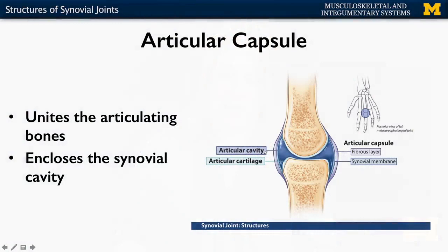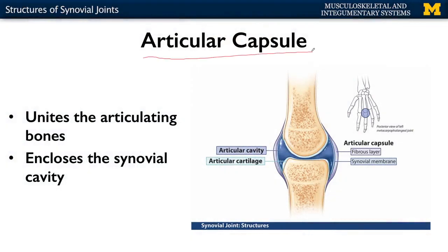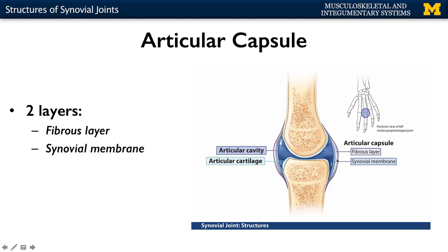Let's start with what we're going to have in all of them. The most important component is what's actually binding the bones — the articular capsule — what's on the edge of either side of the bone. This is what's actually uniting them and enclosing that synovial cavity within. There are two layers to your articular capsule. You'll have your fibrous layer, which is your outer layer. Almost always in anatomy, the outer layer is the more robust protector, and that's true here — it's composed of more dense connective tissue, only allowing certain things into the cavity.